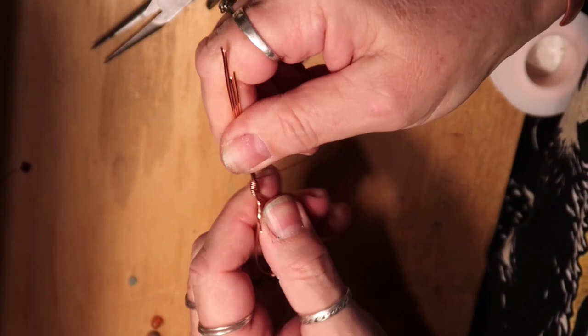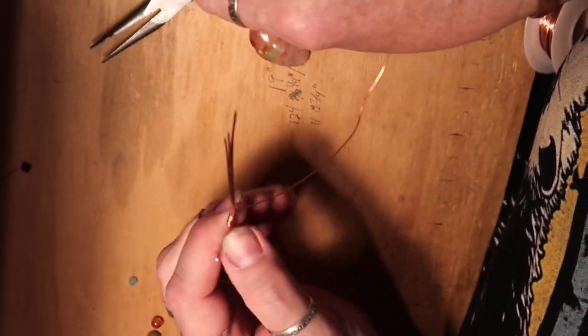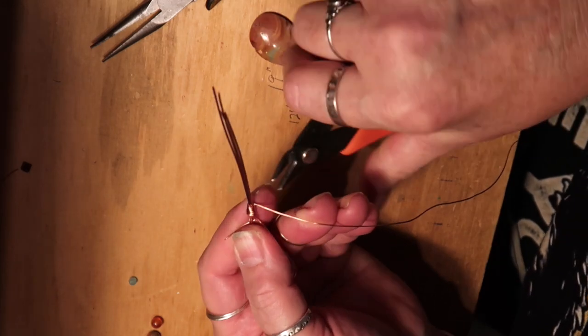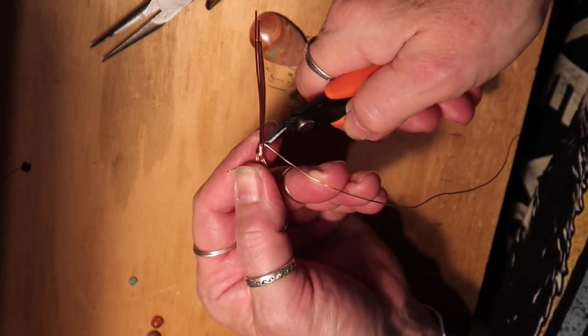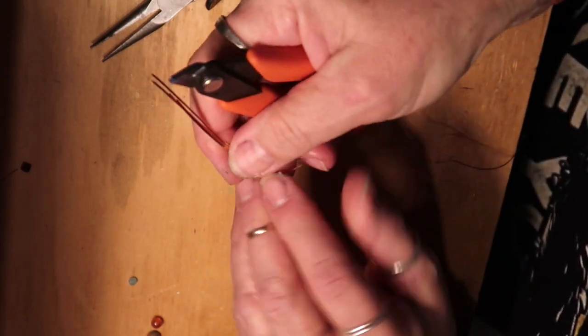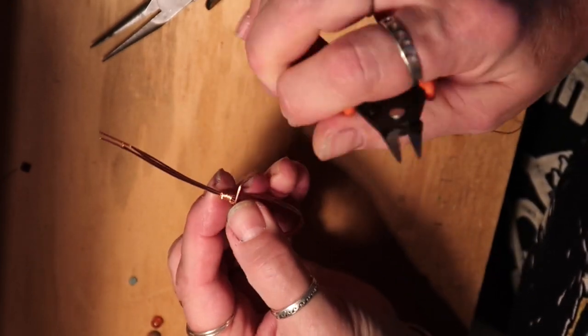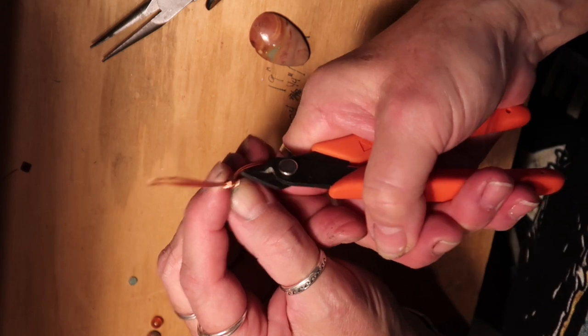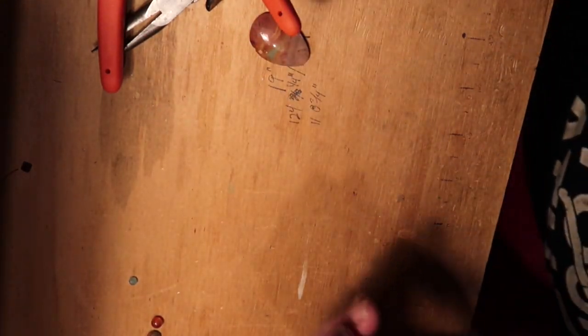It doesn't have to be many and it doesn't have to be perfect because we can move it around. So I'm going to clip this off here and then I'm going to clip this one off back here. There we go. Put this wire off to the side.